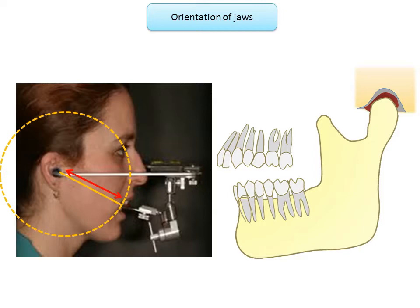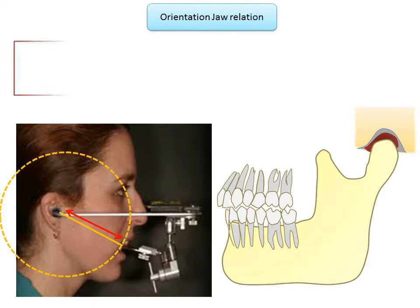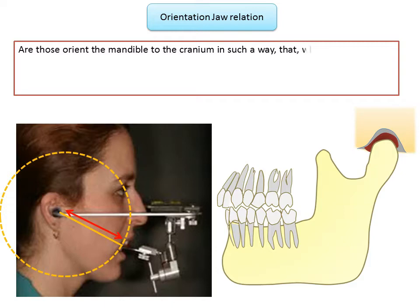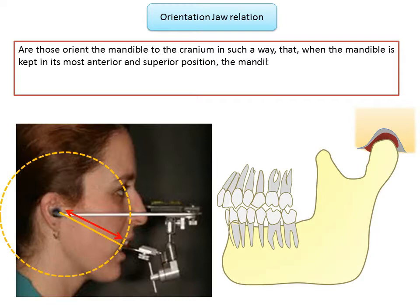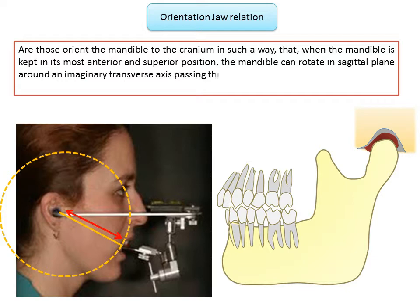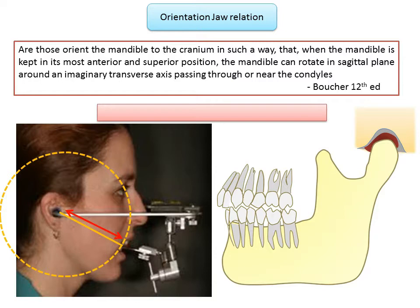According to Boucher's 12th edition, orientation jaw relation is defined as those that orient the mandible to the cranium in such a way that when the mandible is kept in its most anterior and superior position, the mandible can rotate in the sagittal plane around an imaginary transverse axis passing through or near the condyles. It is basically the relationship of the maxilla to the cranium in three planes — anterior-posterior, lateral, and vertical. This is a relationship between the jaws and the axis of movement, not an anatomic relationship between the jaws and the TMJ.